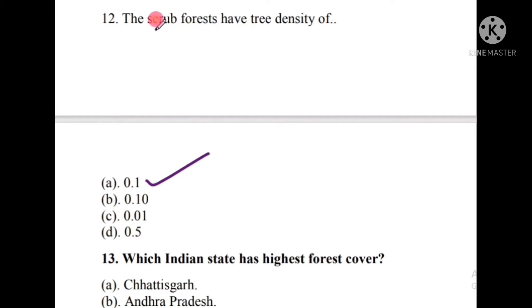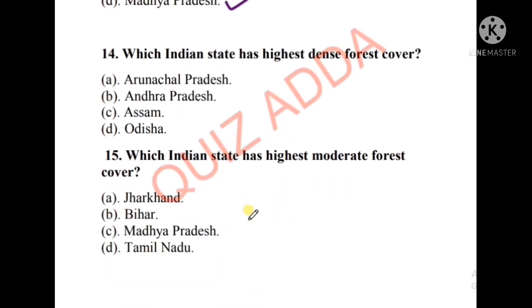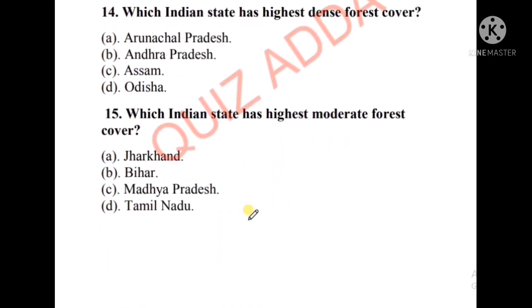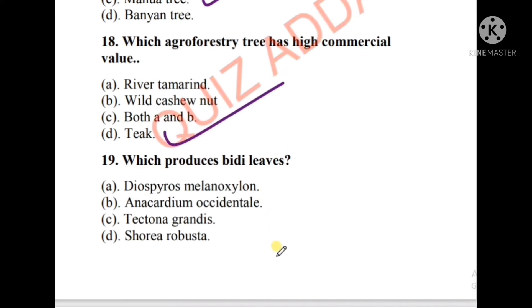The scrub forest has a tree density of 0.1. Question number thirteen: Which Indian state has the highest forest cover? The options are Chhattisgarh, Andhra Pradesh, Assam, or Madhya Pradesh. The right answer is option D, that is Madhya Pradesh. Question number fourteen: Which Indian state has the highest dense forest cover? The options are Arunachal Pradesh, Andhra Pradesh, Assam, or Odisha. The right answer is option A, Arunachal Pradesh. Which Indian state has the highest moderate forest cover? The options are Jharkhand, Madhya Pradesh, Jammu & Kashmir, or Kerala. The right answer is option B, Madhya Pradesh.